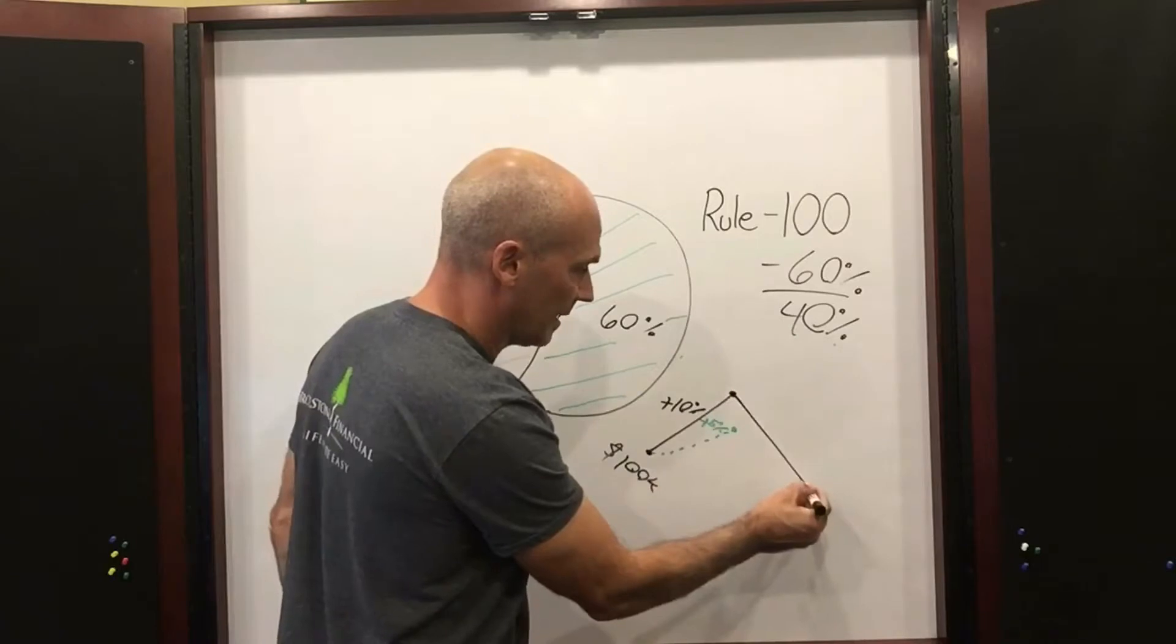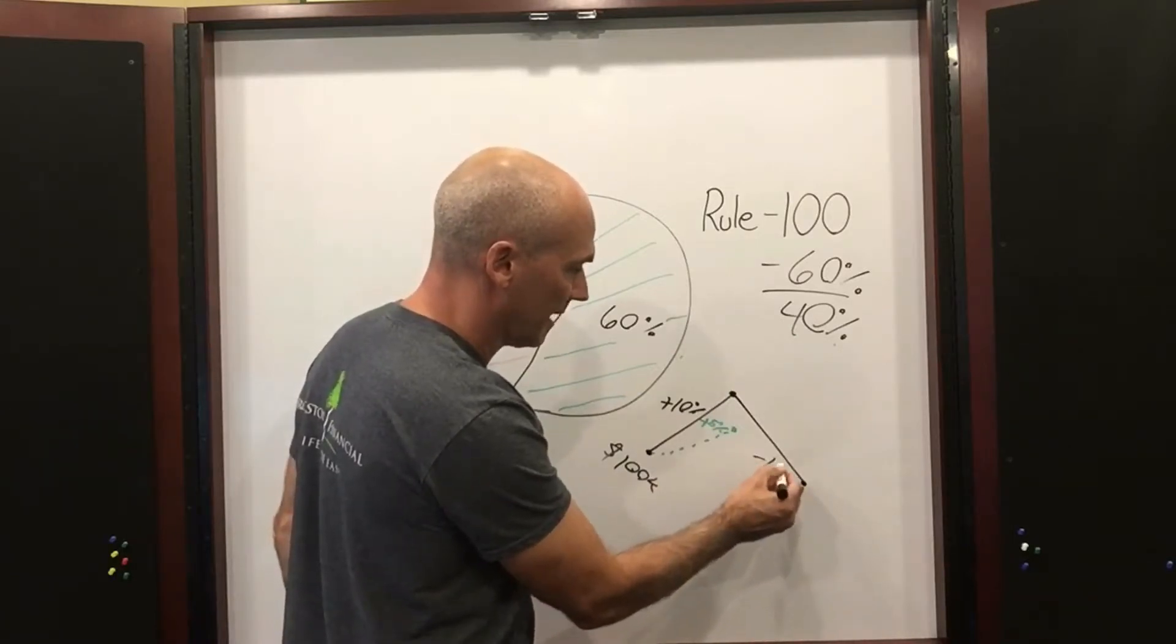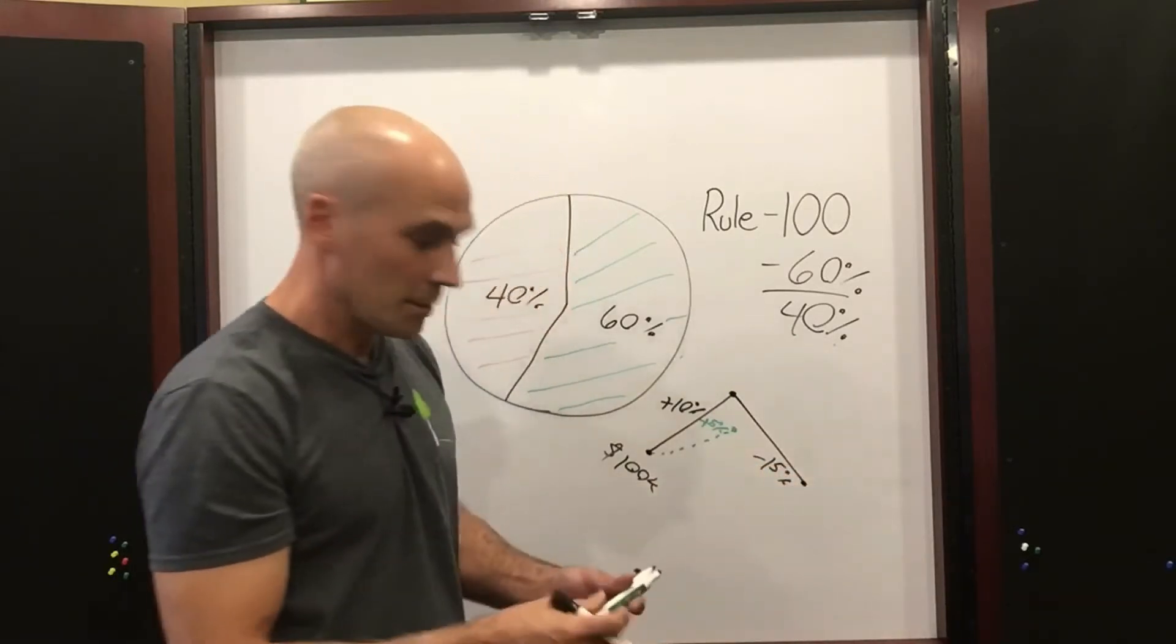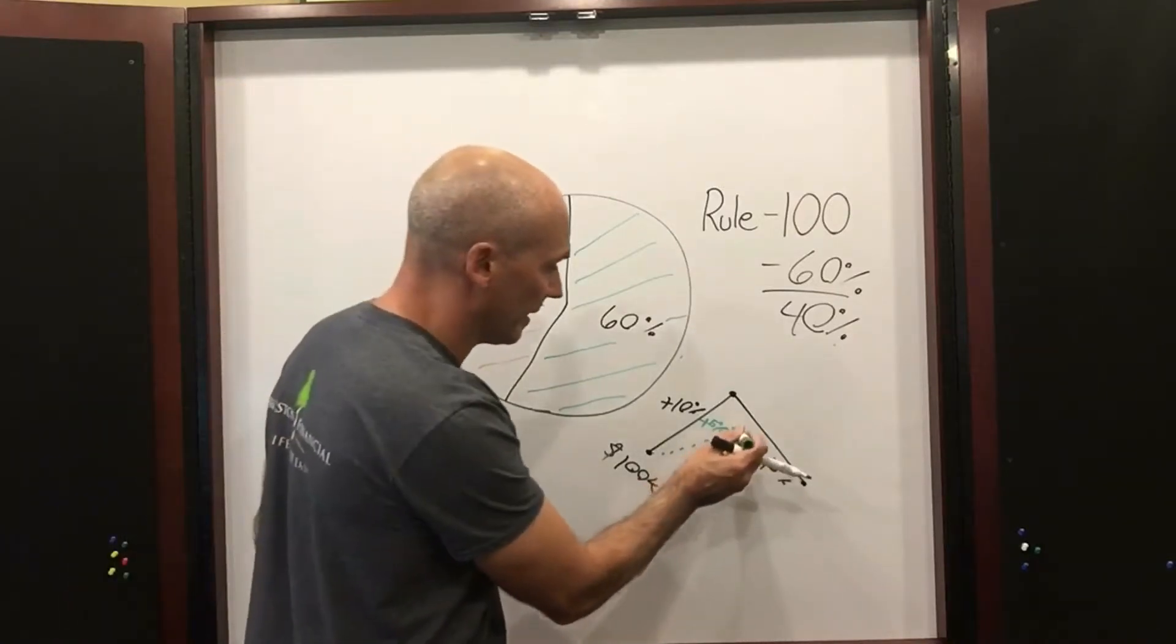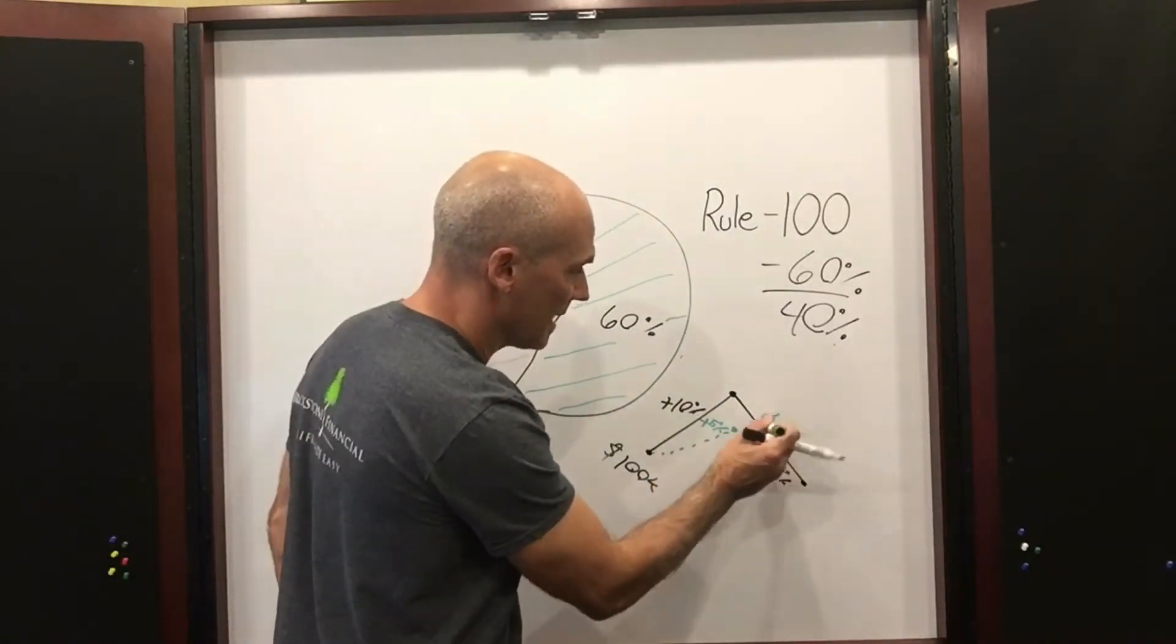Year two, though, if the S&P falls in an index product, let's say the S&P goes down 15%, you don't make anything, but more importantly, you don't lose anything. So that year, you may get a zero.